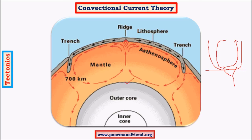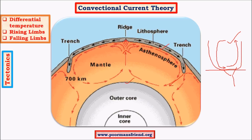Similarly, there is a heat difference between the outer core and the crust, between which lies the mantle. The mantle is in a semi-molten or plastic state, comparatively free to move. This temperature difference creates convection currents in the mantle. These convection currents have different directional flows. The vertical parts of the convection current are called rising limbs when moving upward, and falling limbs when moving toward the inner core.